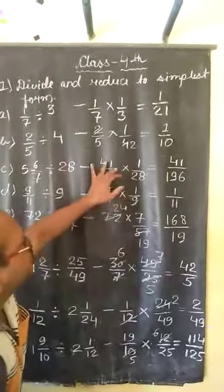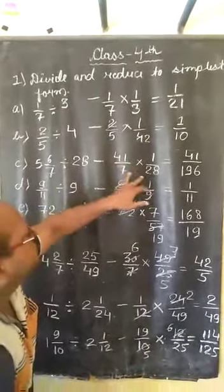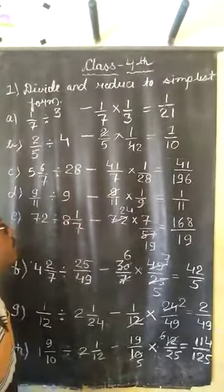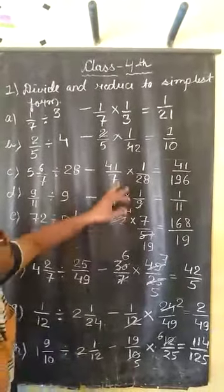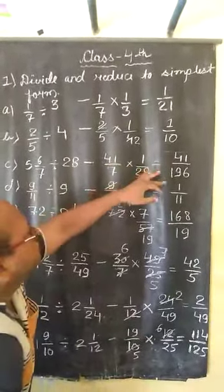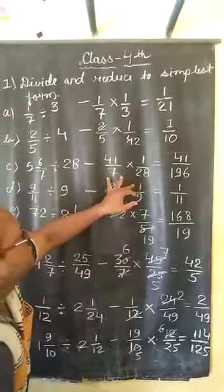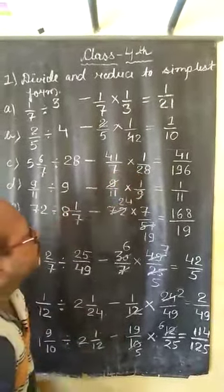So we multiply. It is simplest form, it is not composite number. So we multiply the number, 41 times 1 is 41, multiply 28 by 7 is 196, our answer.